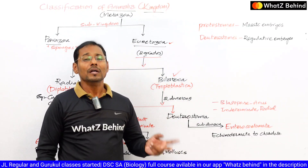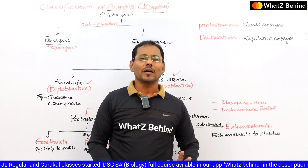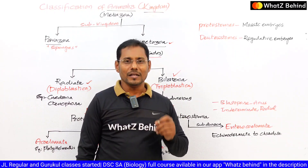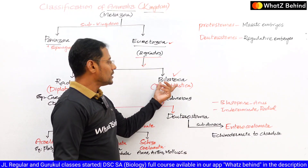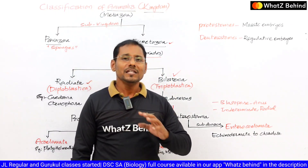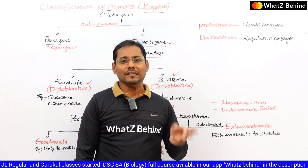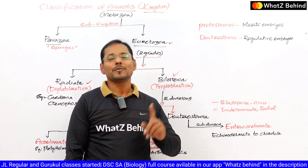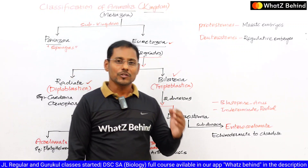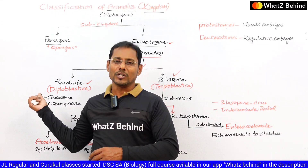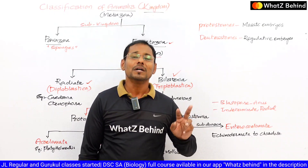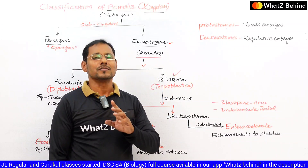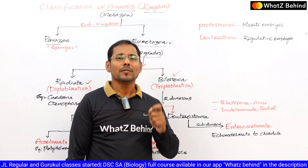Bilaterians always have three layers in their developmental stages: ectoderm and endoderm, and besides these two, one more layer is present — the mesoderm. So there are three embryonic layers, also called three germinal layers, present in the Bilaterians. Therefore they are considered triploblastic. Bilateral symmetry means if you cut the organism, you get two same antimeres — two equal halves. Such symmetry is known as bilateral symmetry.